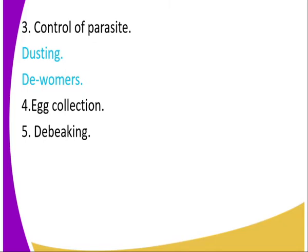You are supposed to regularly collect the eggs so that you can control the vice of egg eating. The perpetual egg eaters and the perpetual cannibals are supposed to be debeaked. This is the process of cutting short the tip of the upper beak to control egg eating vices and also cannibalizing.